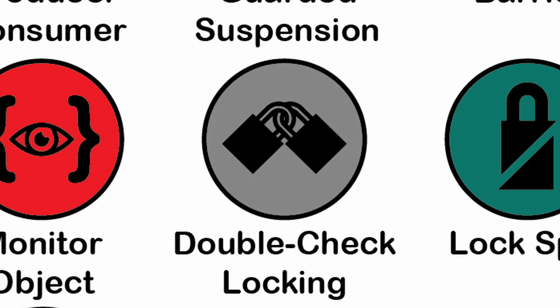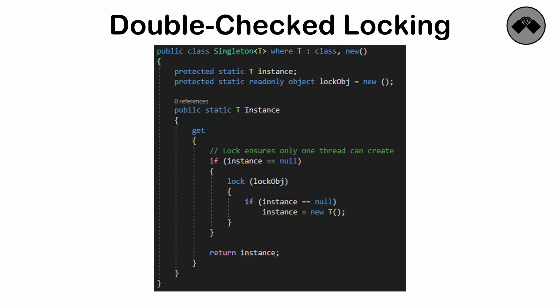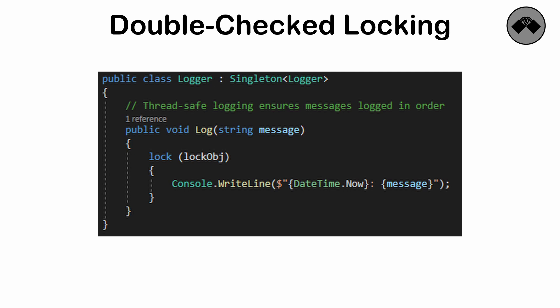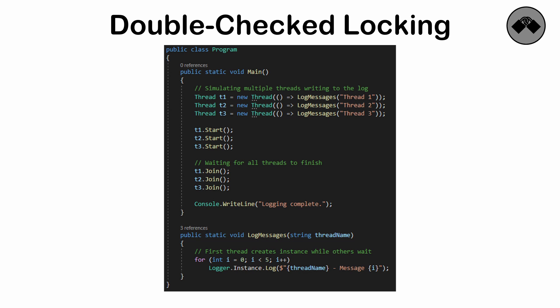Double-checked locking — a means of refining thread-safe initialization, like checking if a door is already locked before retrieving the key. It's commonly used in singleton implementations to ensure resources are initialized only once. In programming, this minimizes performance overhead by only locking threads when absolutely necessary.